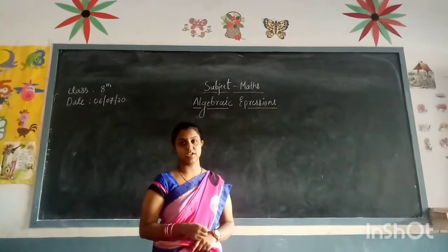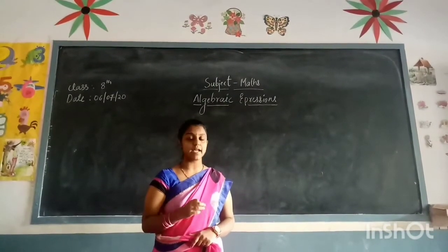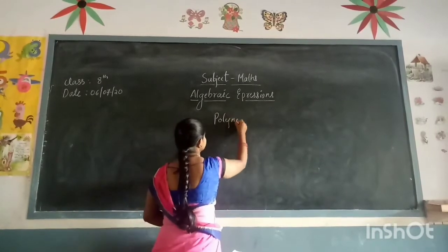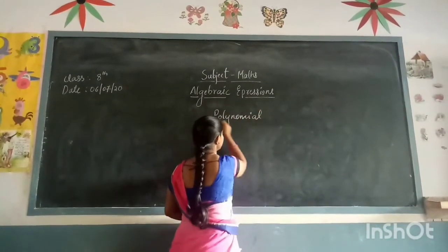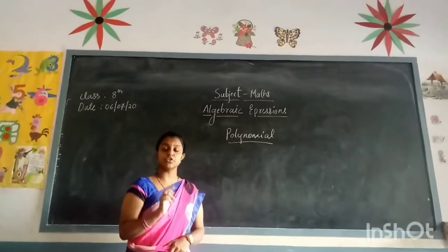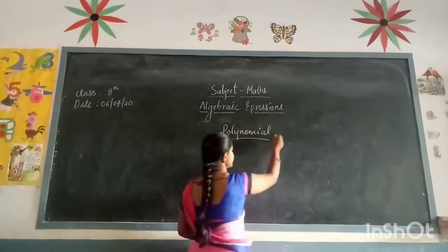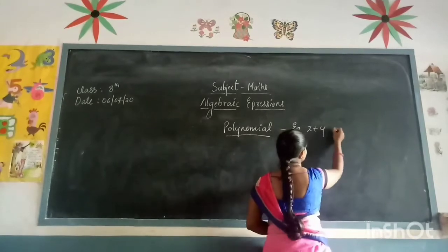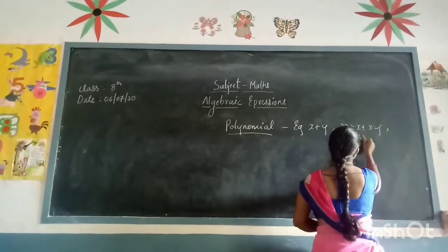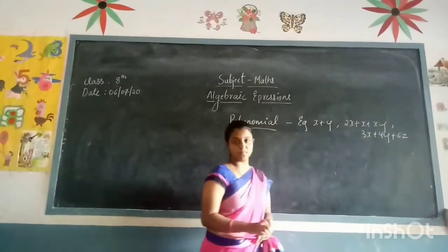If the algebraic expression has terms with only variables and with non-negative integral exponents, then it is called a polynomial. So what do you mean by polynomial? It is an algebraic expression in which the terms have only variables and should not have negative integral exponents. For example, x plus y, 2x plus x plus xy, or 3x plus 4y plus 6 — all these are called polynomials.